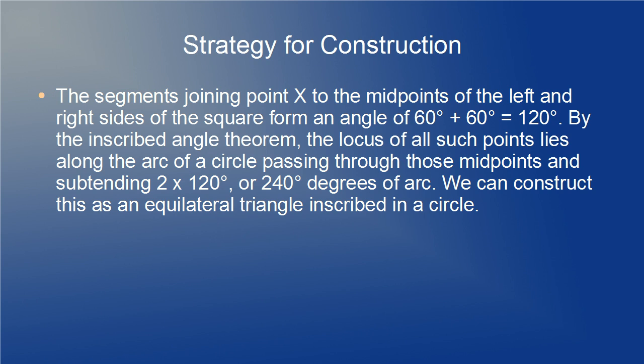Now let's form a strategy for the construction based on these observations. First, the segments joining point x to the midpoints of the left and right sides of the square form an angle of 60 degrees plus 60 degrees, and that's 120 degrees. By the inscribed angle theorem, the locus of all such points lies along the arc of a circle passing through those midpoints and subtending 2 times 120 degrees, or 240 degrees of arc. We can easily construct this as an equilateral triangle inscribed in a circle.